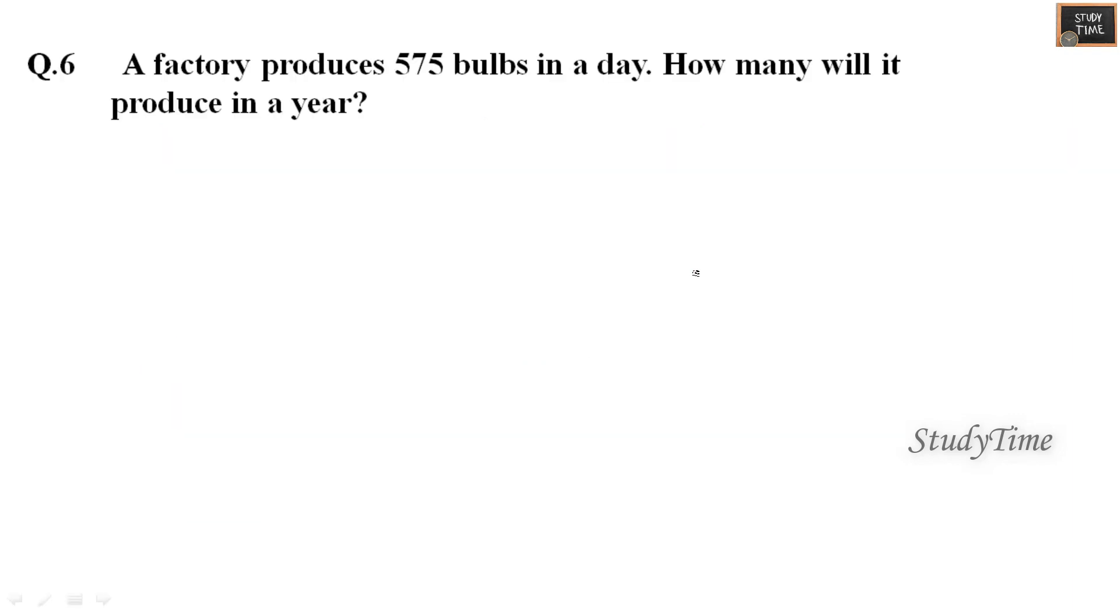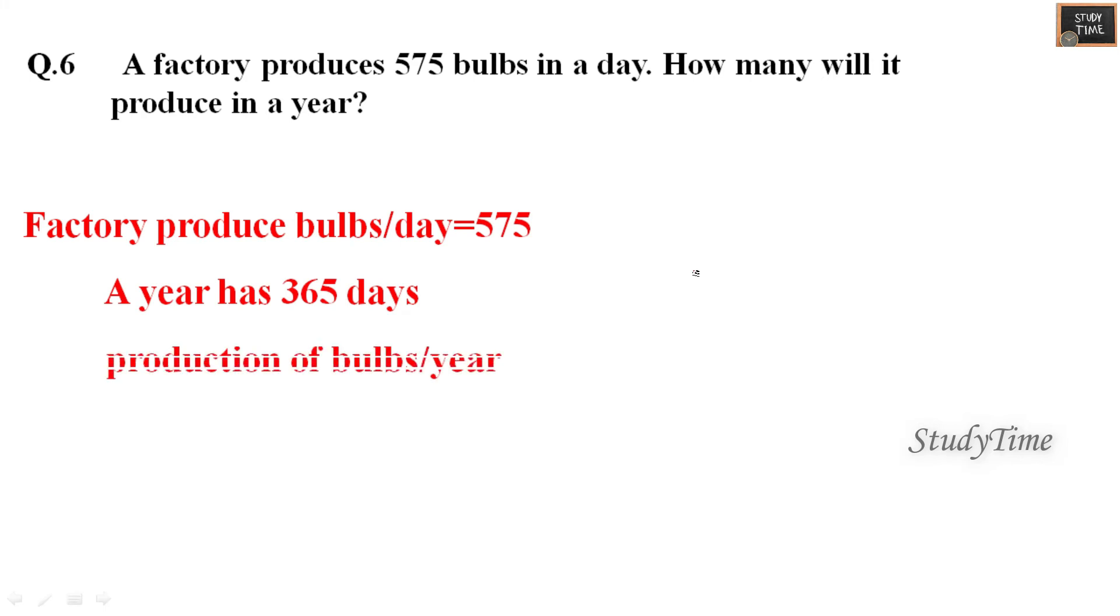A factory produces 575 bulbs in a day. How many will it produce in a year? In a year it has 365 days, so if it is 365 days, then the answer is 2,09,875 bulbs per year.